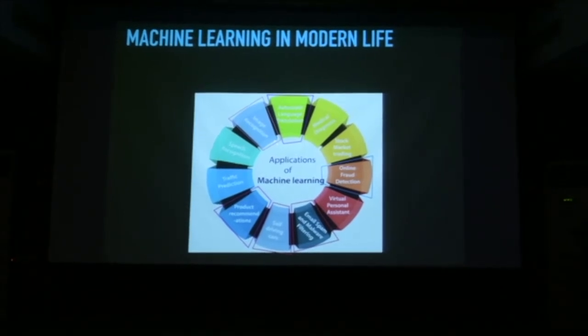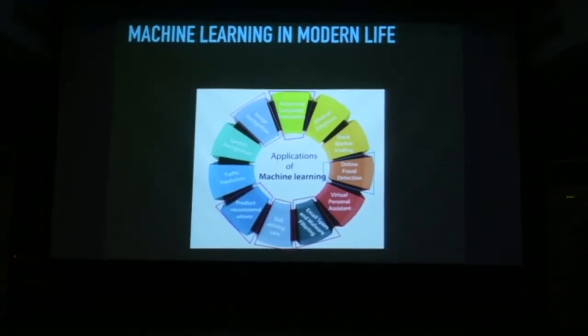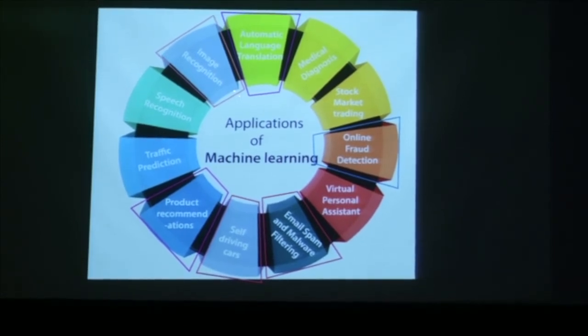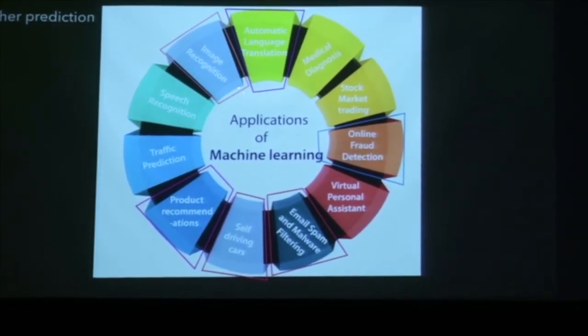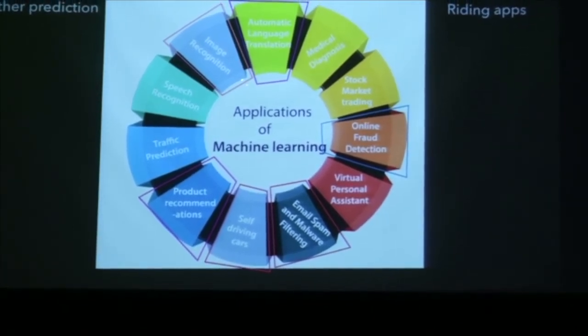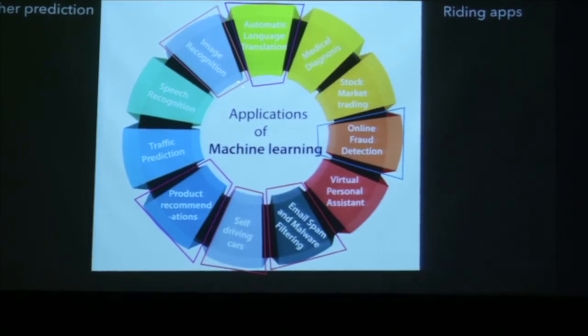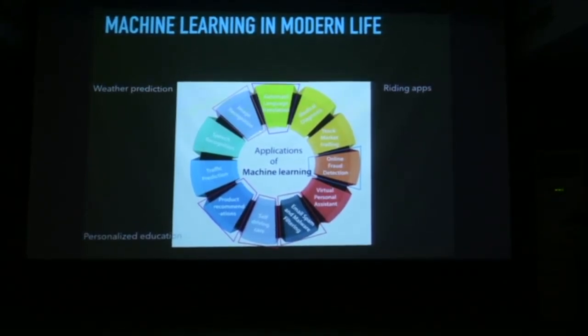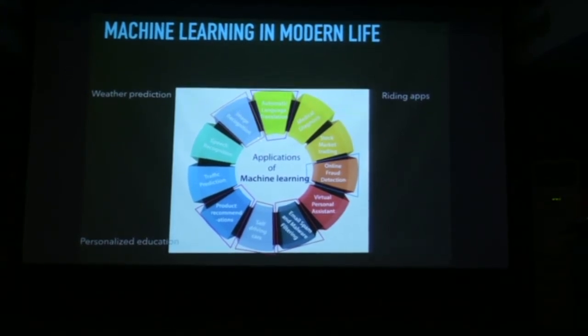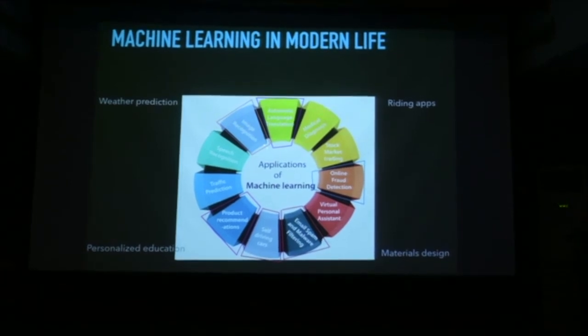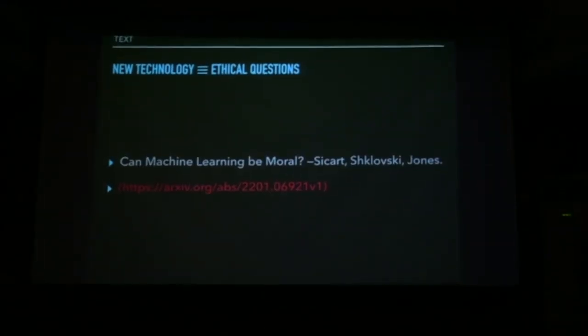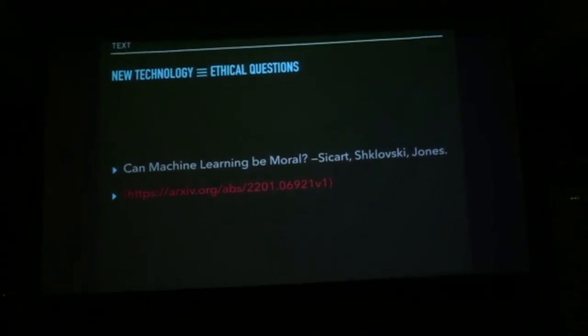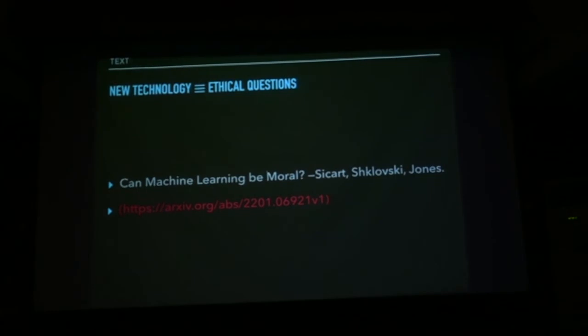So I have given you a sort of broad overview of various aspects of our modern life where machine learning is being used. Some of these I have talked about, explained. And you can add to that weather prediction. You have riding apps like when you book an Uber for example. How does it decide which car will pick you up? There is some machine learning going on behind that. Personalized education is a new area where machine learning is being explored. And materials design I have already talked about. So with that, I will come to my last slide. Like, whenever you have new technology and something as powerful as machine learning, it throws up ethical questions.